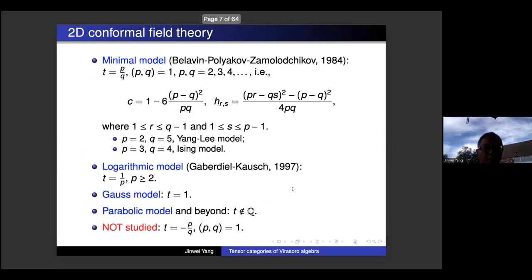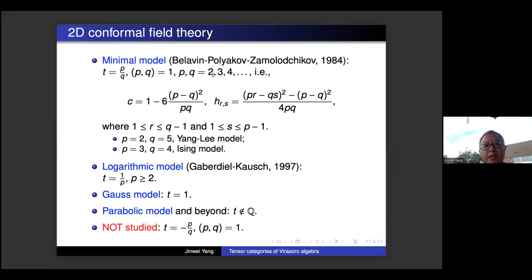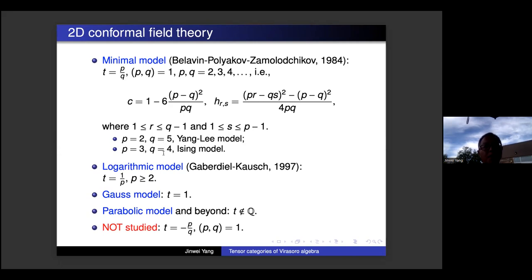The representation of the Virasoro Algebra was already studied by physicists in conformal field theory. In 1984, Belavin, Polyakov, and Zamolodchikov studied minimal models. This corresponds to t = p/q where p, q are coprime and p, q ≥ 2. In this case, c = 1 − 6(p−q)²/(4pq) and h_{r,s} = (pr − qs)²/(4pq). Special famous cases: p=2, q=5 is the Yang-Lee model; p=3, q=4 is the Ising model.